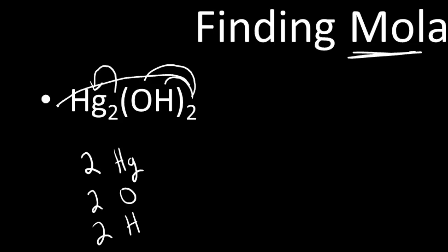So I have two oxygen and two hydrogen. So this formula unit has two atoms of Hg, two atoms of O, and two atoms of H. So what I need to do is I need to add up their respective average atomic masses to find the mass of a whole one of these.